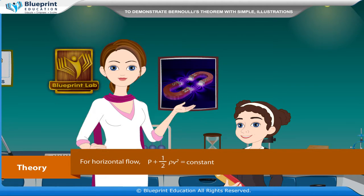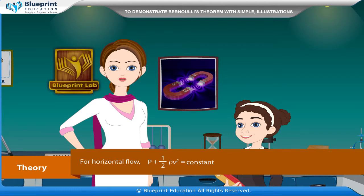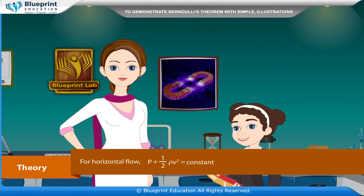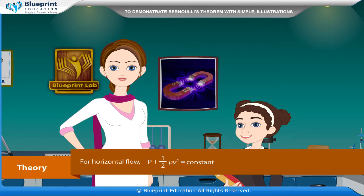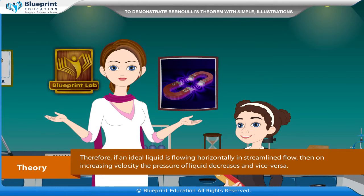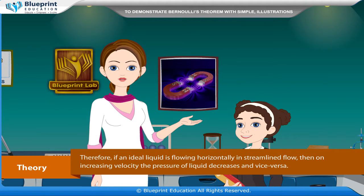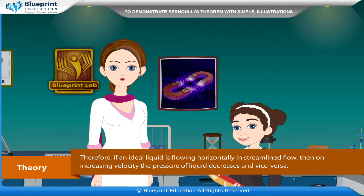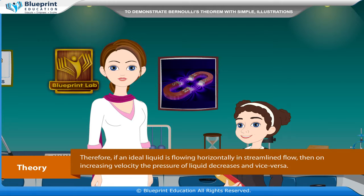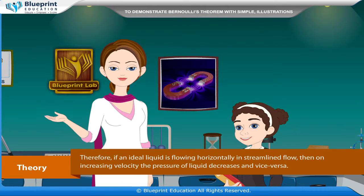For horizontal flow, p plus half rho v square is equal to constant. Therefore, if an ideal liquid is flowing horizontally in streamlined flow, then on increasing velocity, the pressure of the liquid decreases and vice versa.